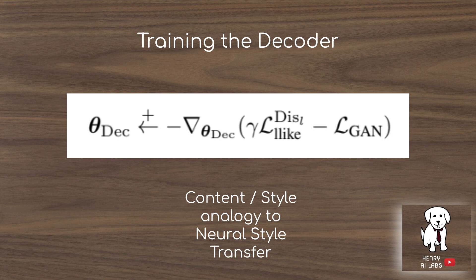To train the decoder, they draw an interesting analogy with neural style transfer and how it weights the content and style of an image. They reason that the intermediate feature distance between the reconstructed and original image is like the content — how similar it is to the original. The GAN loss is like the style of the dataset, because it's not specific to any one individual instance.